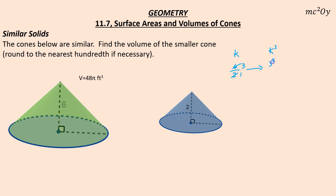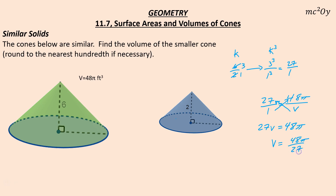If I want to compare the volumes, I have to cube the scale factor: 3³ to 1³, which is 27 to 1 in terms of volume. To calculate the volume of the smaller one, I take 48π — the bigger volume — and compare it using this new scale factor. Cross-multiplying gives 27b = 48π. Dividing 48π by 27, which can be reduced by taking a 3 out of each, gives 16π/9. That's the exact volume. Rounded, it's 5.59 cubic feet.